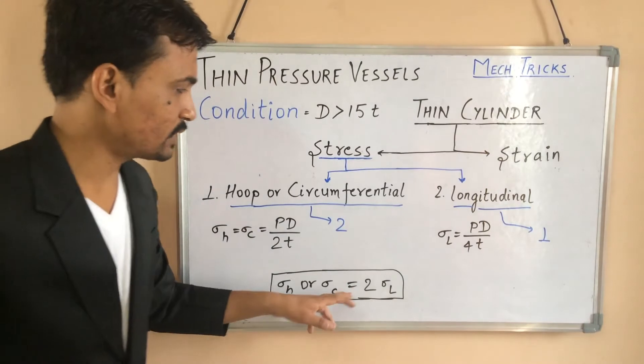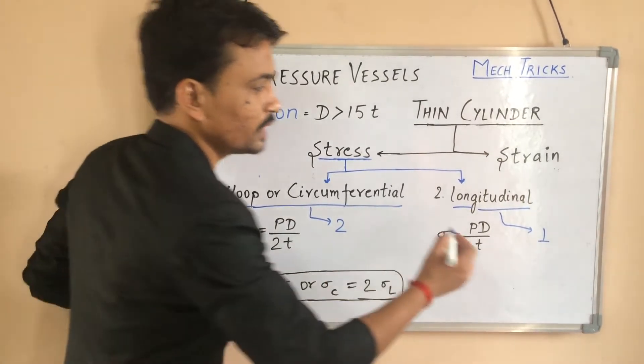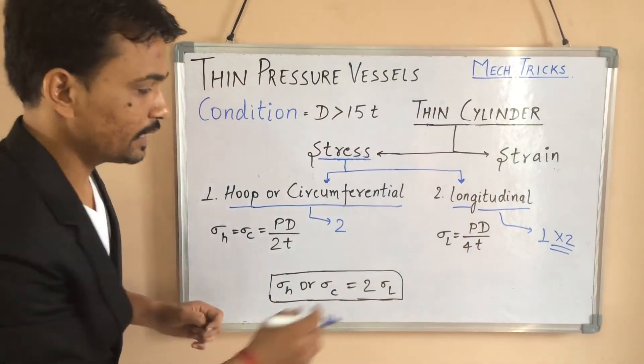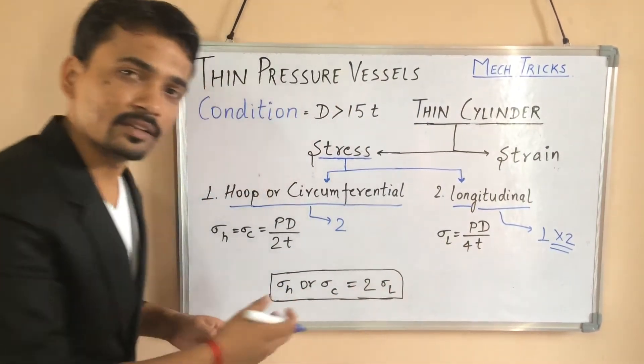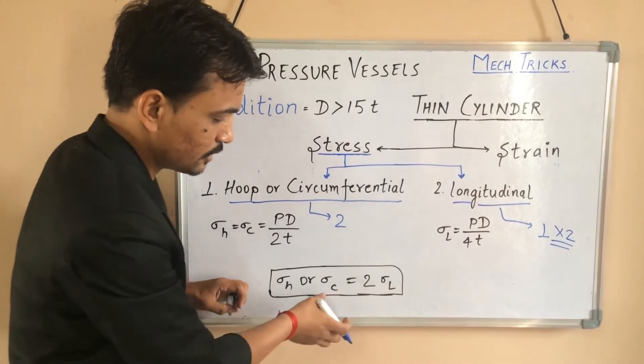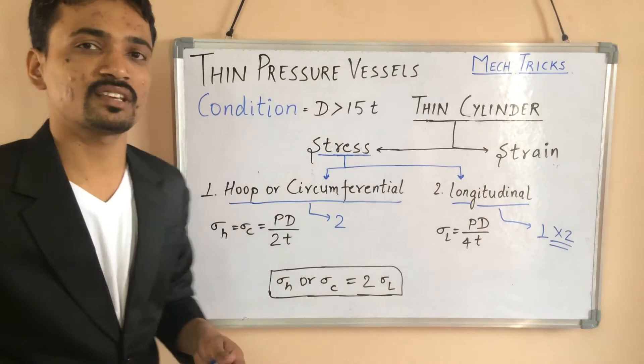And here we are going to equate these both things. So we need to multiply this with two to make it equal. And thus it can be seen that two times the longitudinal stress is equal to hoop or circumferential stress.